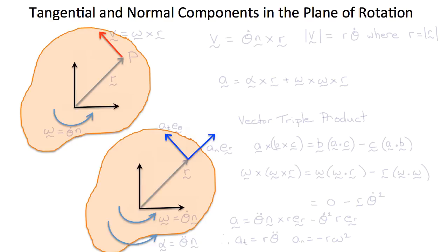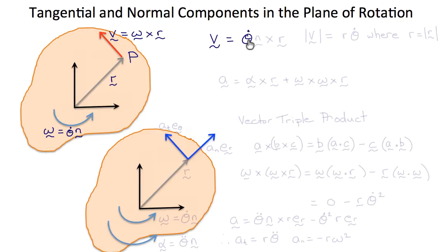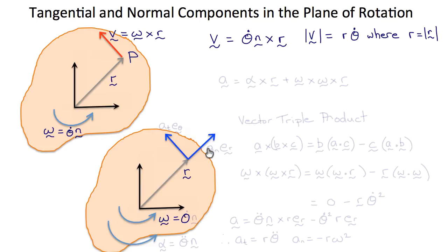Let's consider the tangential and normal components of the acceleration of a point in the plane normal to the axis of rotation, rotating in circular motion about the origin. Point P has position vector r and angular velocity ω = θ-dot · n, where n is a unit normal vector perpendicular to the plane. The velocity v = ω × r = θ-dot · n × r, and the magnitude of v equals r·θ-dot, where r is the magnitude of r.